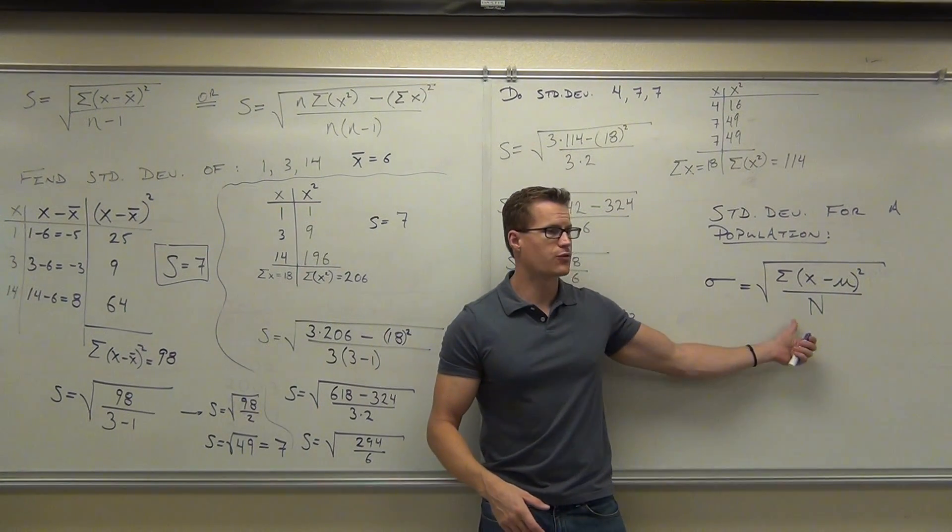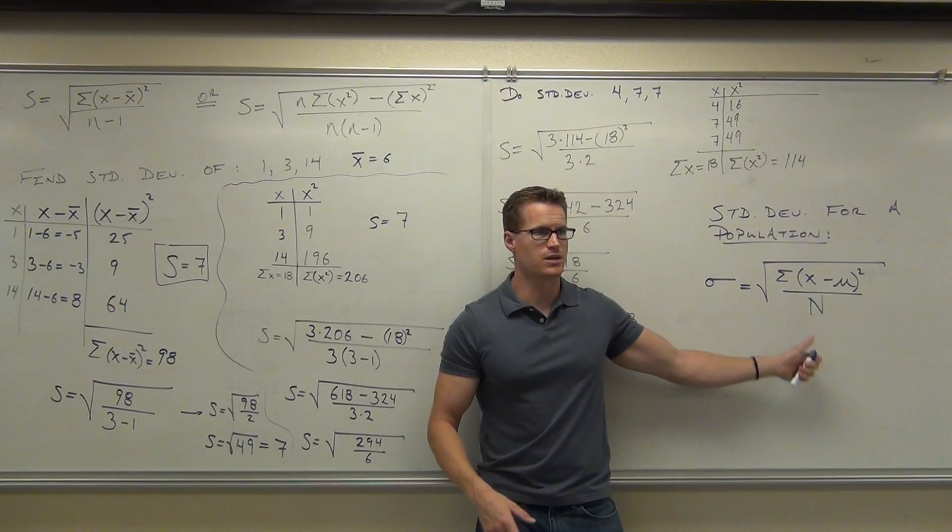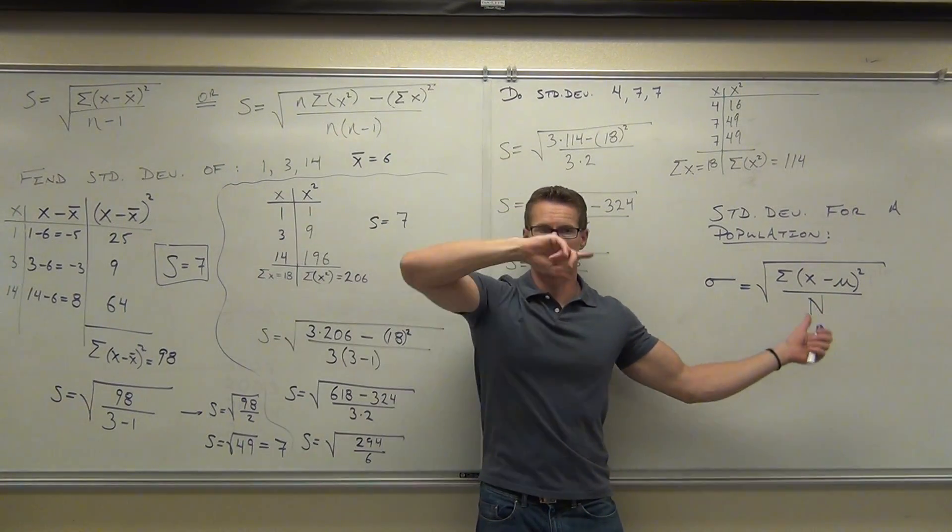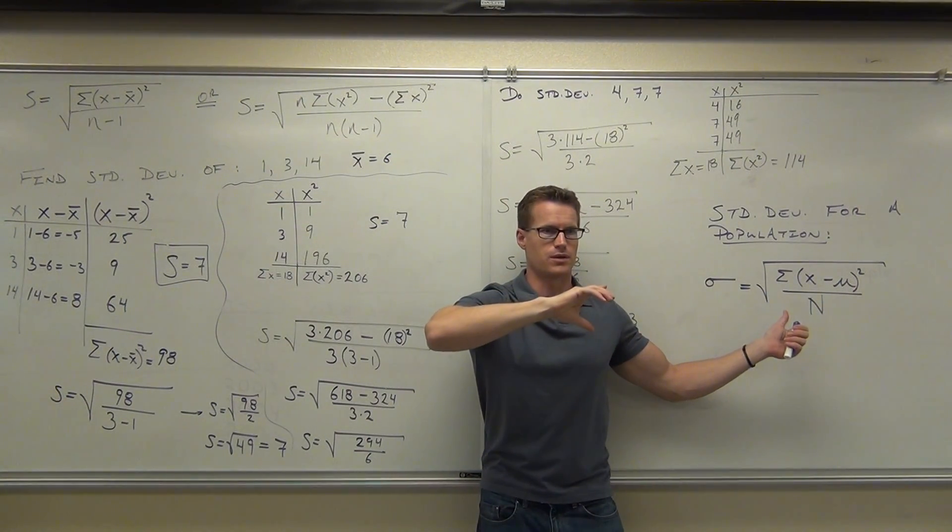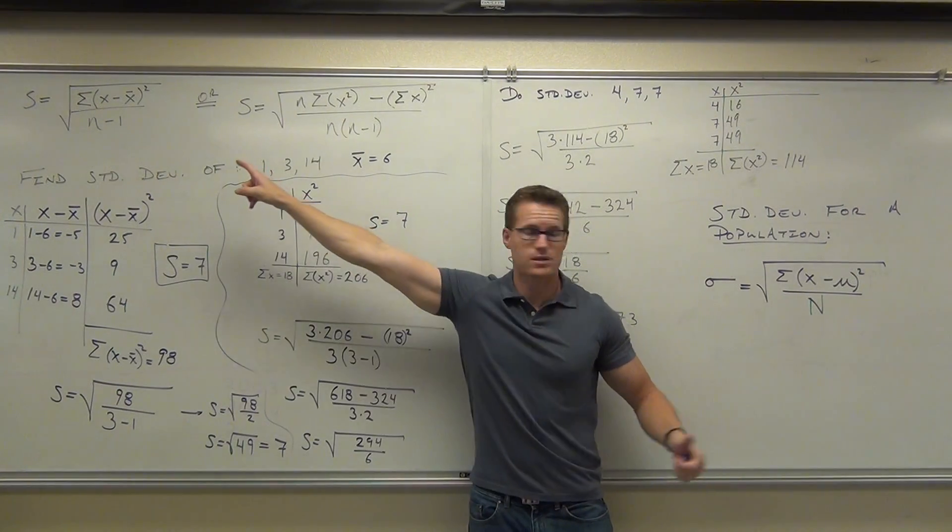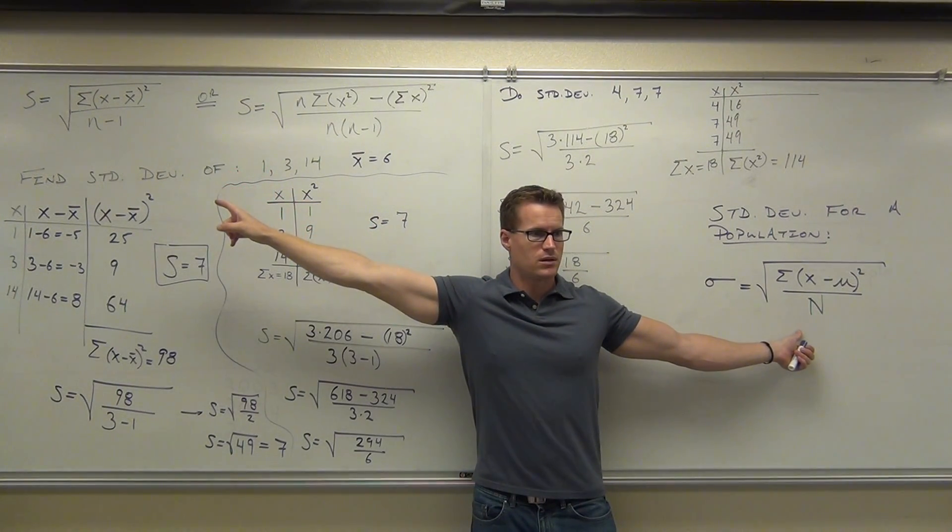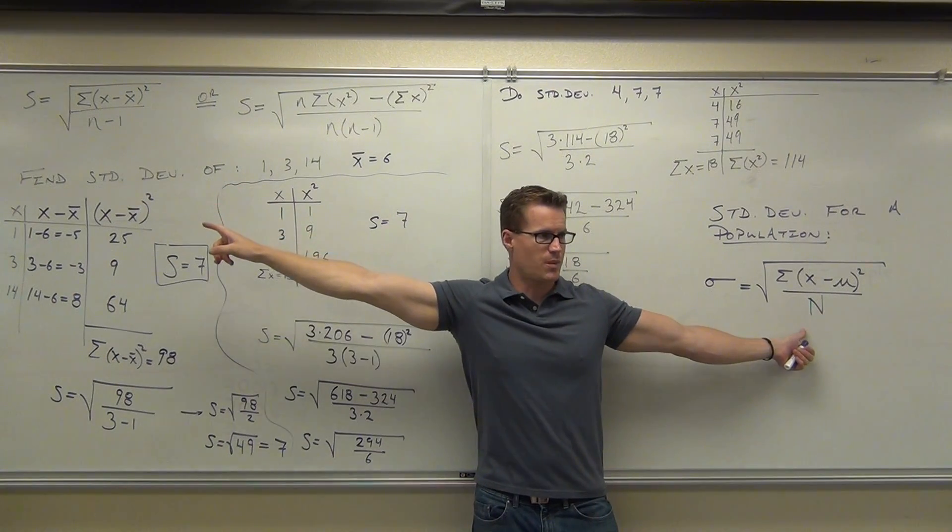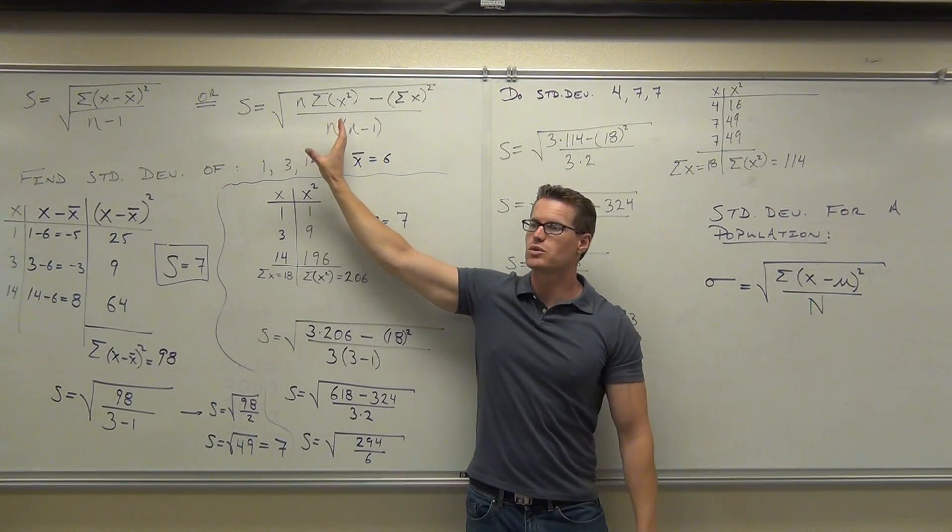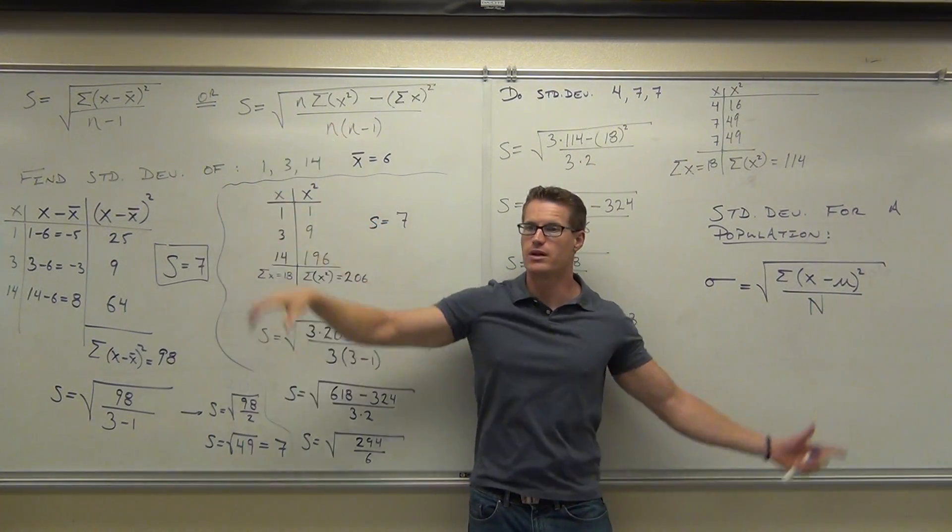Okay, you're also going to notice that's the only formula I'm going to give you for population because this one does not have a corollary. It doesn't go along with anything. So this and that are your main standard deviations. Okay, that one's for sample, this one's for population. This is like a special case for a sample. You don't have that over here.